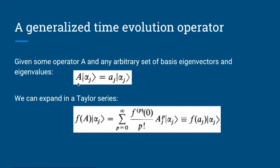If we have an operator — say operator A, for example a Hamiltonian — and I operate on a basis function alpha with A, I get that basis function back multiplied by its eigenvalue. That's standard eigenvector-eigenvalue stuff. The trick we're always using: if we want to express some complicated function, we make a Taylor series out of it. So we're going to expand our function of the operator into a Taylor series.